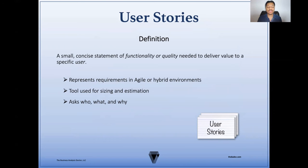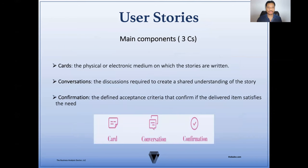The typical user story asks who, what, and why. The main components of user stories typically include what we call the three Cs, which includes cards, conversations, and confirmation.